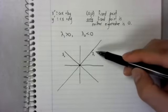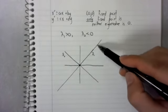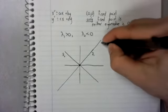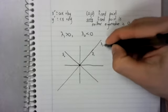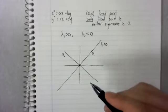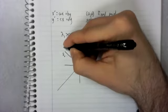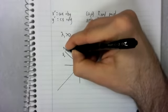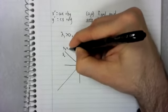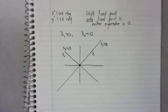So, this is the eigenvector corresponding to a positive eigenvalue. This is the eigenvector associated with a negative eigenvalue.